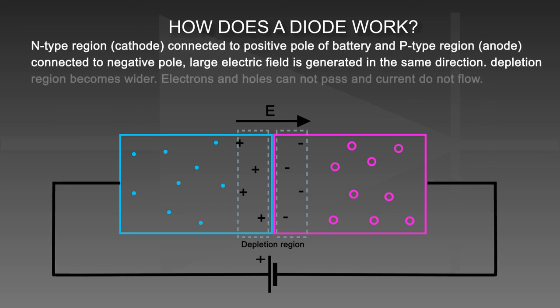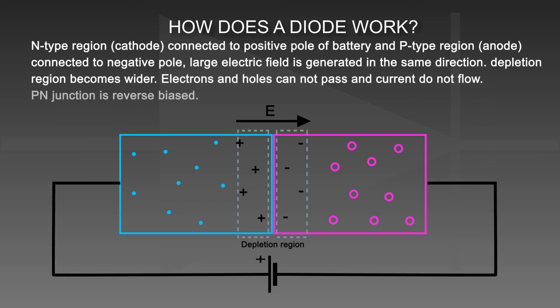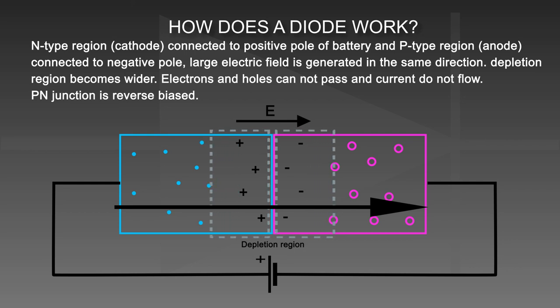When the N-type region is connected to the positive pole of the battery and the P-type region is connected to the negative pole, a large electric field is generated in the same direction. The depletion region becomes wider, electrons and holes cannot pass, and current does not flow. The P-N junction is reverse biased.